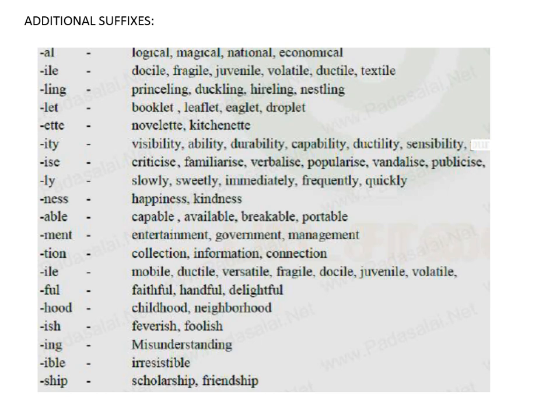-ness: happiness, kindness. -able: capable, available, breakable, portable. -ment: entertainment, government, management. -tion: collection, information, connection. -ile: mobile, ductile, versatile, fragile, docile, juvenile, volatile.